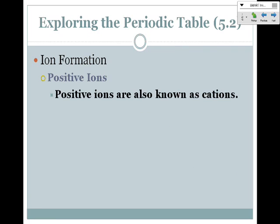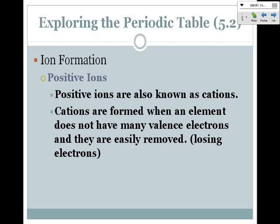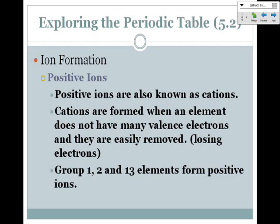Forming positive ions. Positive ions are also known as cations. Negative ions are called anions, and the way I remember that, even though I don't really like cats, cations are a more positive thing to me than ants. Cations are formed when an element does not have many valence electrons, so they're easily removed. A cation becomes positive because it's losing those electrons or negative charges. These are going to be your metals. Your metals lose electrons easily and form positive ions. The groups 1, 2, and 13 of your elements are the ones forming positive ions. They're going to give away their electrons and become positive.